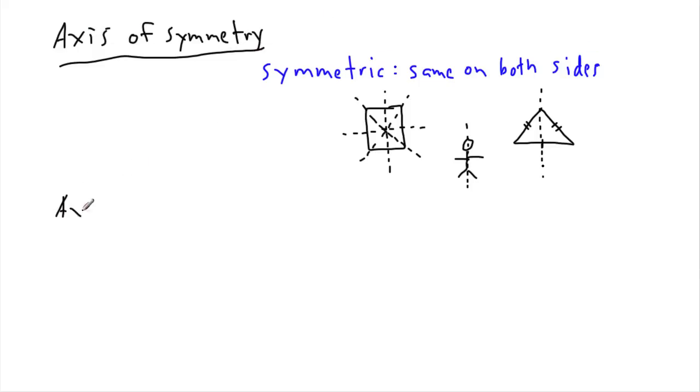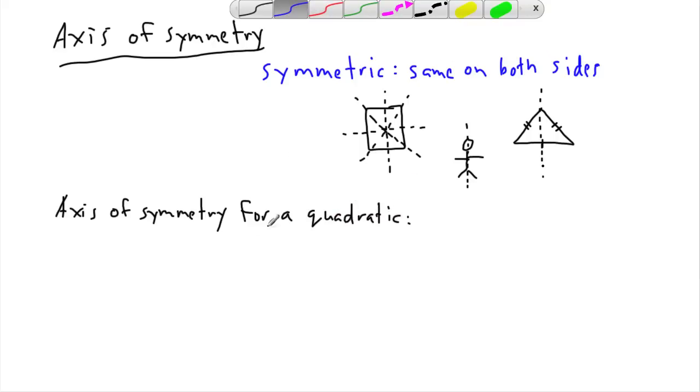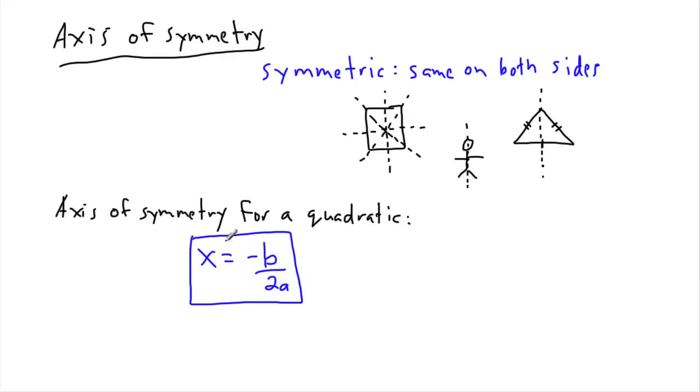Well, parabolas are symmetric as well. So the axis of symmetry for a quadratic actually has an equation. And it goes like this. It's actually x = -b/2a. This is really helpful. So what that means is, if you have an equation like y = ax² + bx + c, if you look at b and a and you take -b/2a, that will give you the axis of symmetry. That will give you the x value of it.